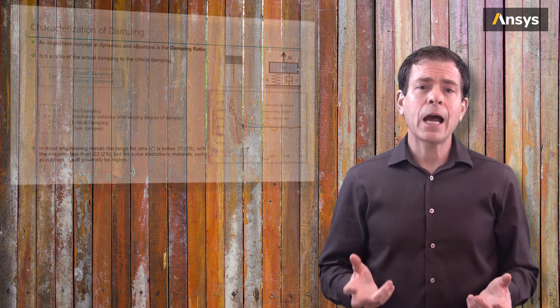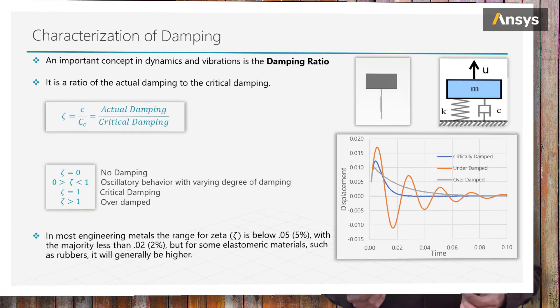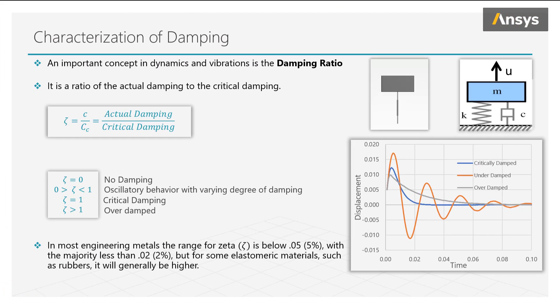A very common way to characterize damping is through the damping ratio. The damping ratio is the ratio of the actual damping to the critical damping. Lower values specify less damping and large values specify more damping.